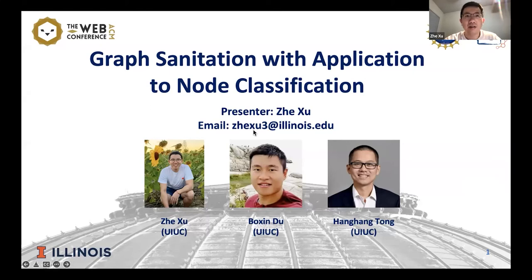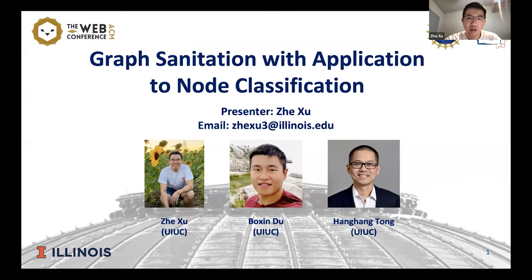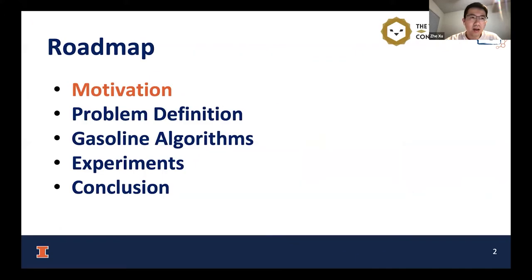Welcome to our presentation about our recent paper, Graph Sanitation with Application to Nodal Classification. I'm presenter Jay, and this is a joint work with my colleagues from University of Illinois at Urbana-Champaign. The joint authors are Dr. Du and my advisor, Dr. Tom. I'll start with the paper motivation, then introduce the problem definition with our proposed algorithms, show the experimental results, and conclude.